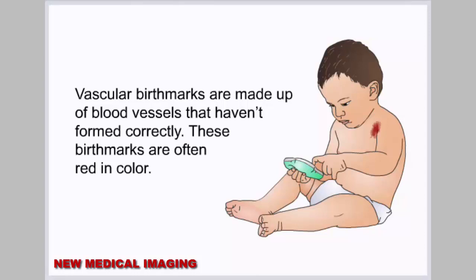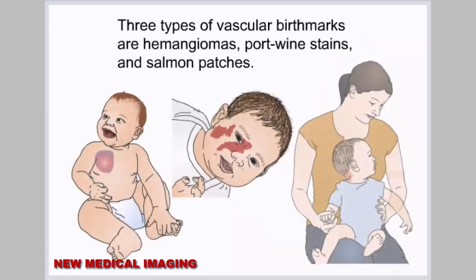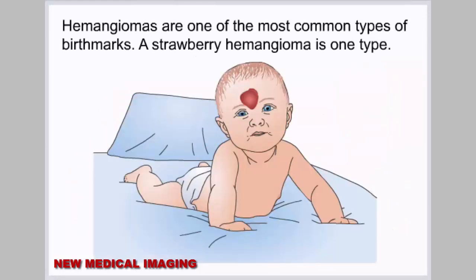There are two types of birthmarks. Three types of vascular birthmarks are hemangiomas, port wine stains, and salmon patches. Hemangiomas are one of the most common types of birthmarks; a strawberry hemangioma is one type.